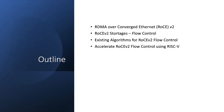This is the outline of my talk. I'll talk about four aspects. First, RoCE v2 — RoCE stands for RDMA over Converged Ethernet. Next, the RoCEv2 shortage, basically flow control — that's the most significant shortage of RoCEv2. Thirdly, I will introduce the existing algorithms for RoCEv2 flow control. And in the end, I will talk about how we accelerate RoCEv2 flow control using RISC-V.